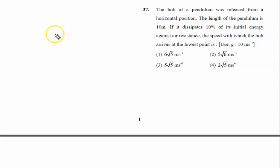The bob of a pendulum was released from a horizontal position. The length of the pendulum is 10 meters. If it dissipates 10 percent of its initial energy against air resistance, find the speed with which the bob arrives at the lowest point.